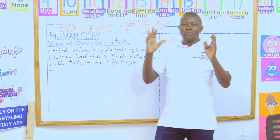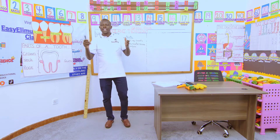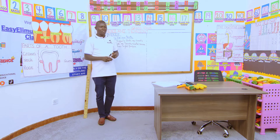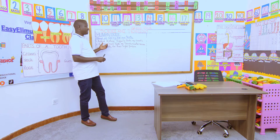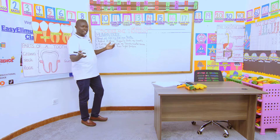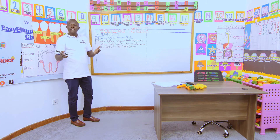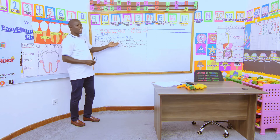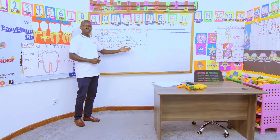And today, I want us to discuss in our groups ways on how we can take care of our teeth. Now I will start by asking group one: one way on how we take care of our teeth is what? From you Tom — avoid eating sugary foods. Avoid eating sugary foods.